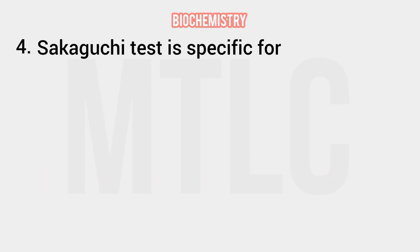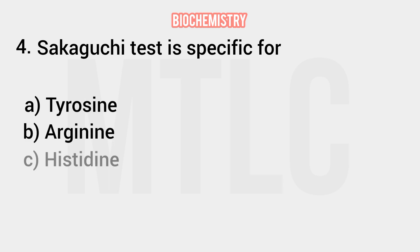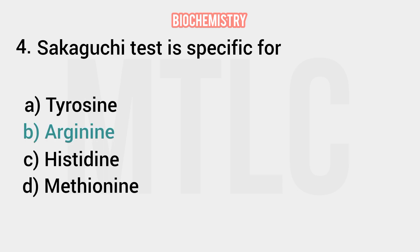Question number 4: the Sakaguchi test is specific for which amino acid? The options are Tyrosine, Arginine, Histidine, and Methionine. The right answer is Arginine. The Sakaguchi test is a specific test for Arginine.